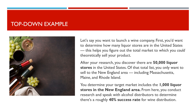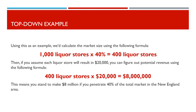Of that total, you only want to sell to the New England area, including Massachusetts, Maine, and Rhode Island. You determine your target market includes the 1,000 liquor stores in the New England area. From here, you conduct research and speak with alcohol distributors, to determine there's a roughly 40% success rate for wine distribution. Using this, we calculate: 1,000 liquor stores times 40% equals 400 liquor stores.